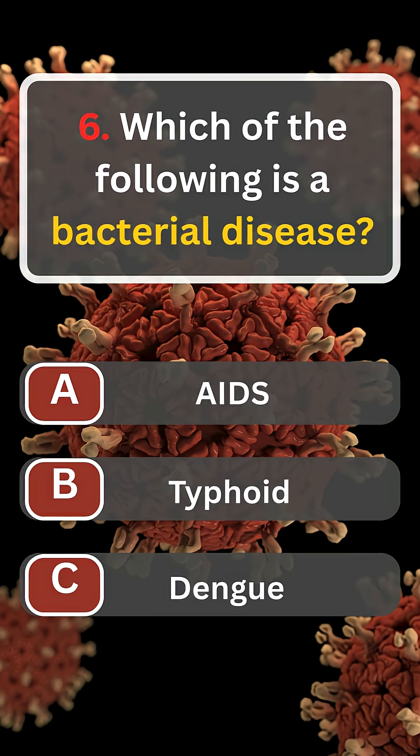Question number six. Which of the following is a bacterial disease? A. AIDS. B. Typhoid. C. Dengue. Comment your right answer and scorecard in the comment box.